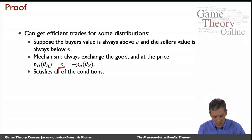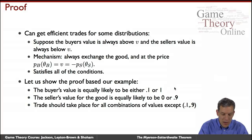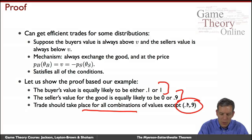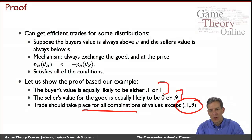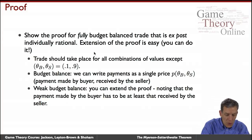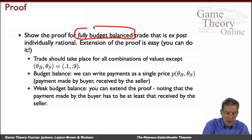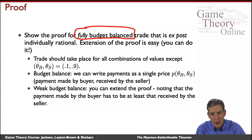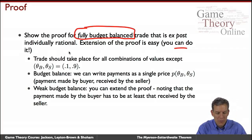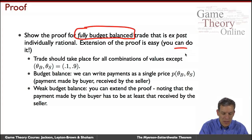The theorem applies when distributions cross over — sometimes we want trade and sometimes we don't. For the proof, buyers' values are equally likely to be 0.1 or 1, sellers' values equally likely to be 0 or 0.9. Trade should take place for all combinations except (0.1, 0.9). I'll show the proof for full budget balance, which makes it a little easier, with an extension to weak budget balance left as an exercise.